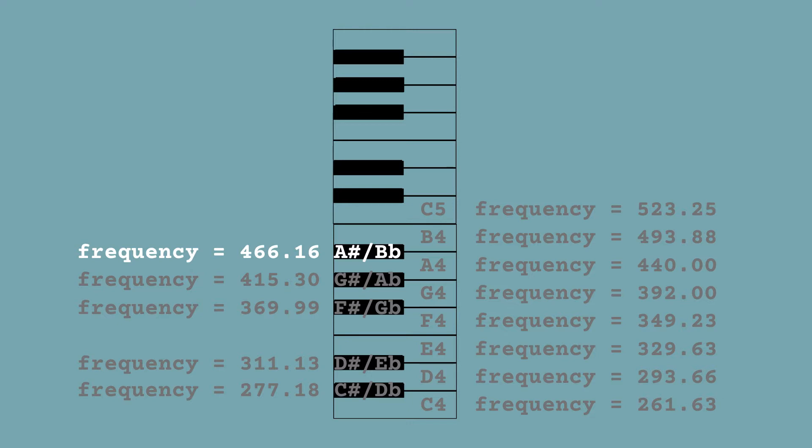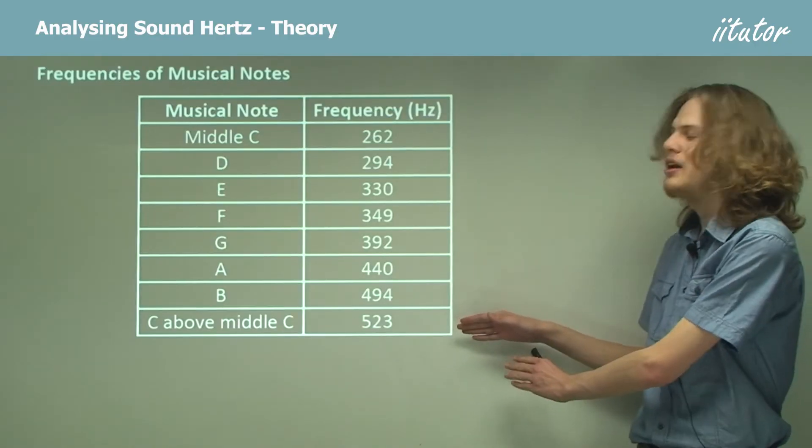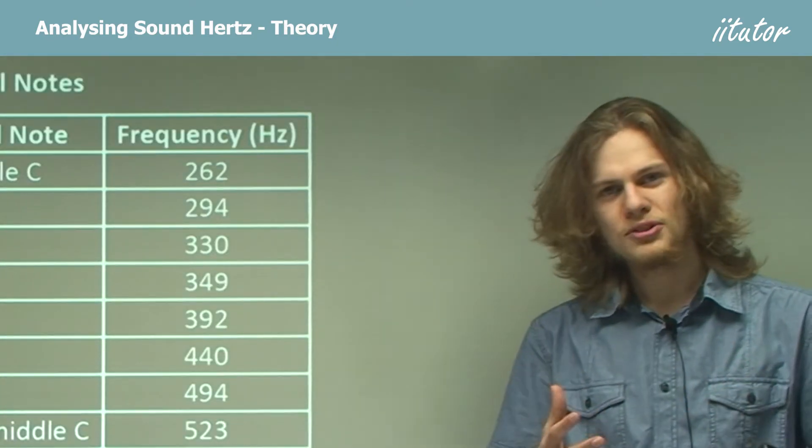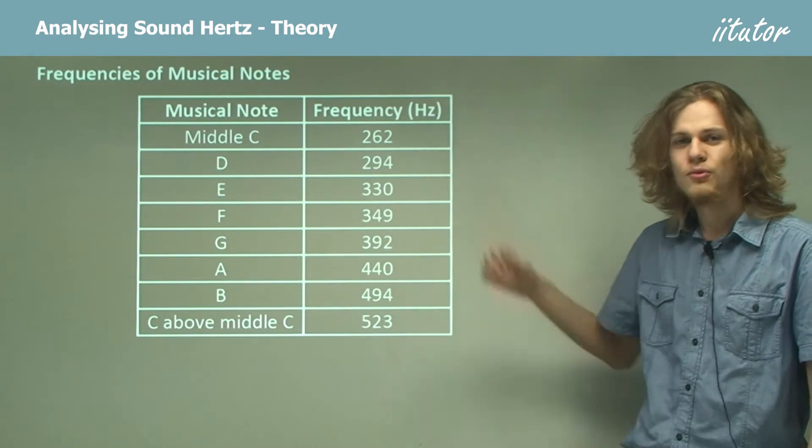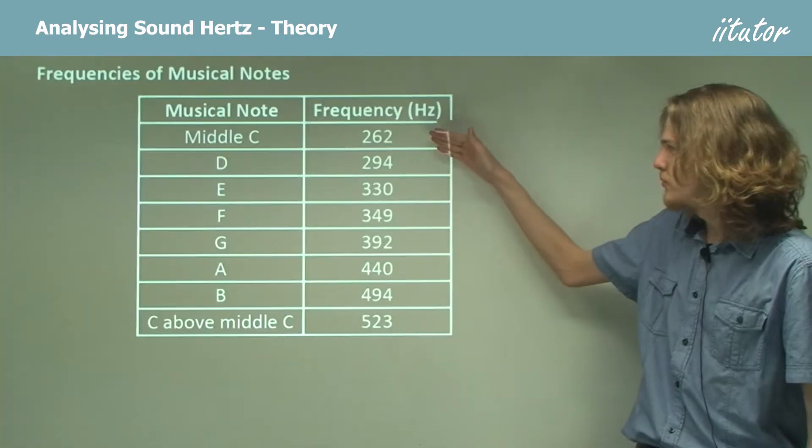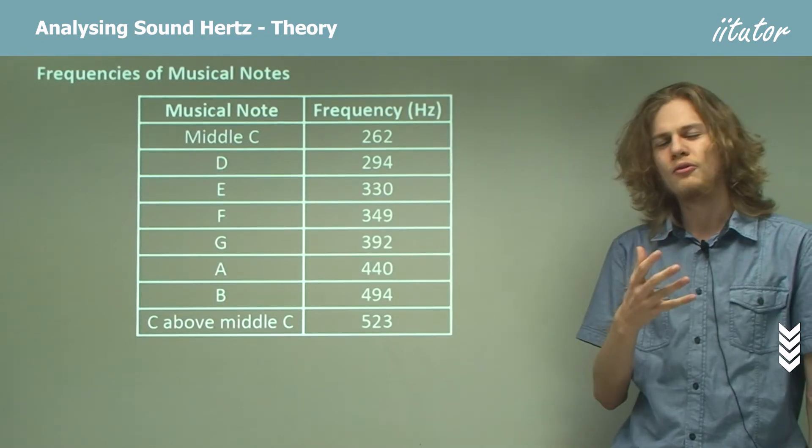This system lets us describe many different frequencies of note but without using numbers. Because all the different notes have different frequencies, we can write them down. If we have a starting note, say middle C, that will have a frequency of around 262 hertz.